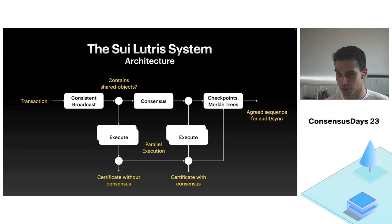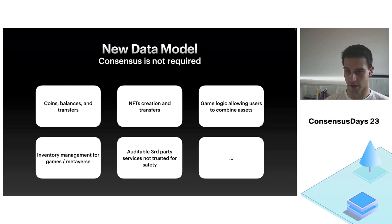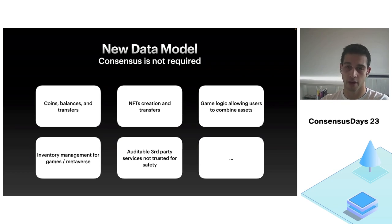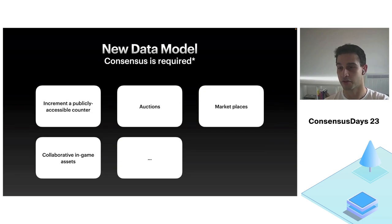How do we make the distinction between which transactions need consensus and which don't? We observe that everything that looks like coin balances, transfers, NFTs, or game logic where a single player owns a character and mutates it does not really require consensus — these are fundamentally single-writer operations. Then there are other applications like marketplaces, auctions, and more complicated global contracts or collaborative assets that require consensus. We use consensus for all of those.